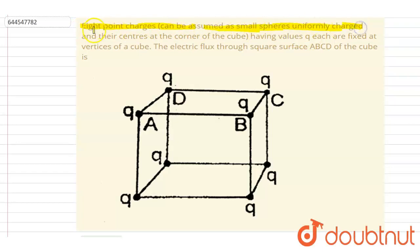Point charges can be assumed as small spheres uniformly charged with their centers at the corners of the cube, having value q each, fixed at the vertices of a cube. Find the electric flux through the square ABCD of the cube.